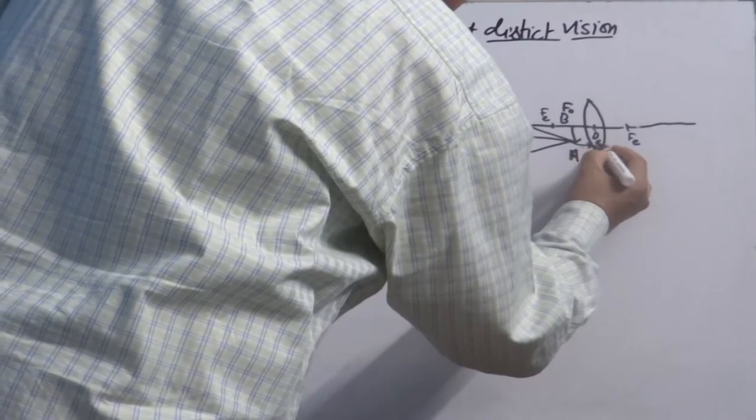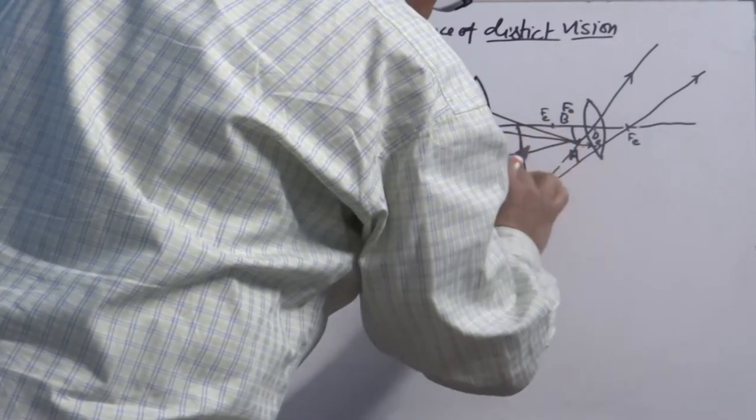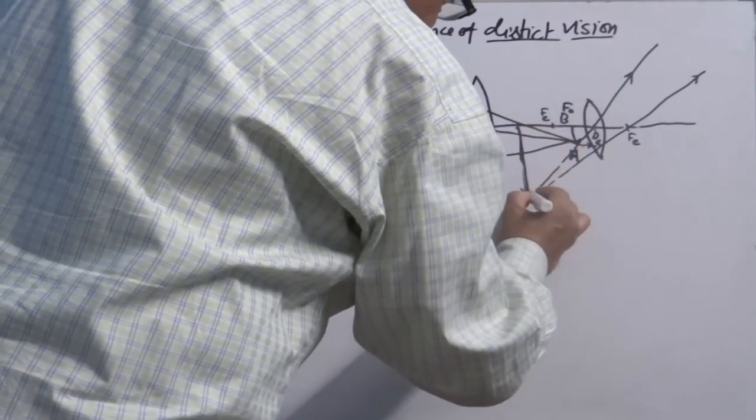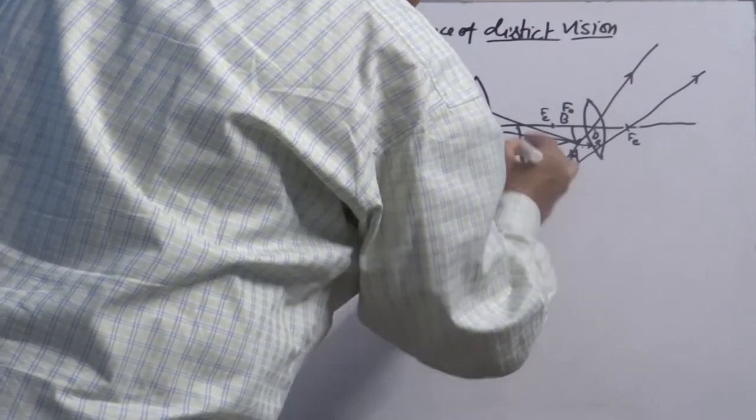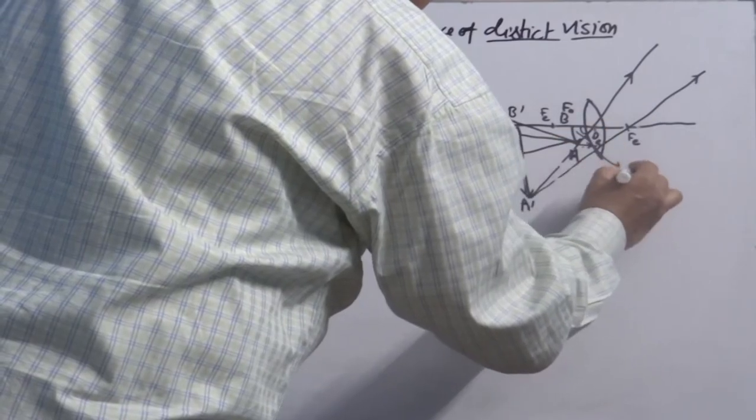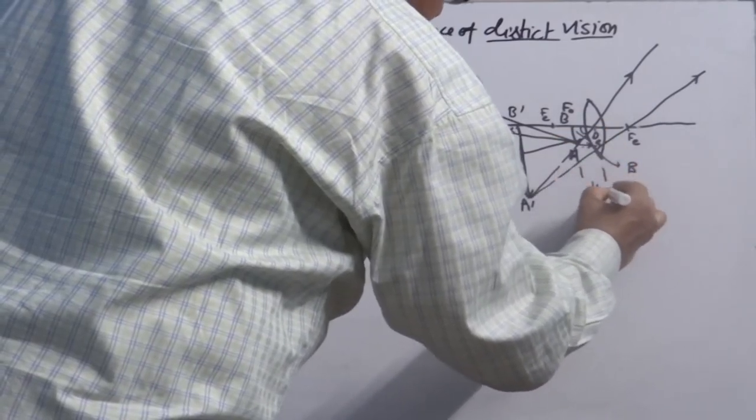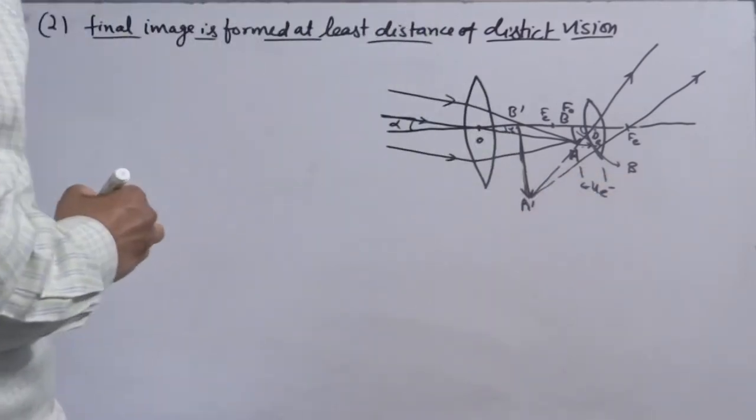Follow the rules: the ray coming parallel passes through the focus; the ray passing through the optical center moves straight. Extend back, draw a perpendicular from the principal axis — this will be your final image A'B'. This angle is alpha, this is also alpha — same. This angle is beta. Now ue is the distance of the object from the eyepiece lens, and the final image is formed at the least distance of distinct vision.